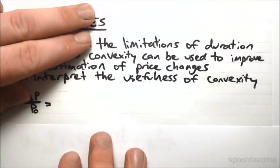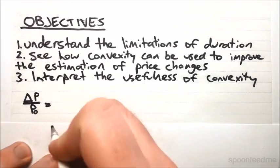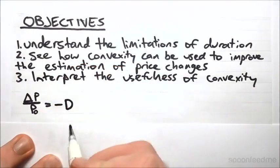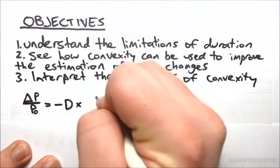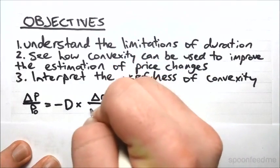So to start off, how do we approximate the change in price in response to a change in yield? Remember that we calculated our duration by taking the derivative of the price with respect to yield and scaling by both the price and the yield. So we say that ΔP/P is equal to negative duration, because with duration we took the negative of that derivative, multiplied by the change in yield over 1 plus the yield.